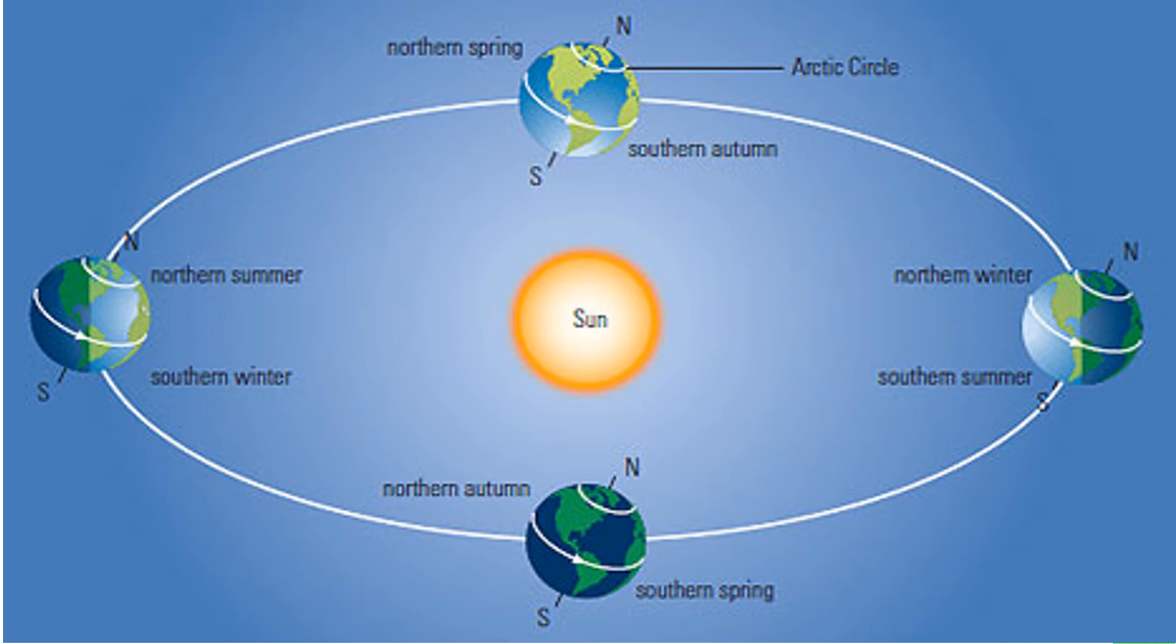Consider the position of Earth on 22nd of December. Rays of the Sun fall perpendicular to the southern hemisphere and with an inclination to the northern hemisphere. Therefore, winter occurs in the northern hemisphere and summer to the southern hemisphere. Seasonal changes are distinct in polar regions. Countries like Sri Lanka, which are closer to the equator, have no distinct seasonal changes.